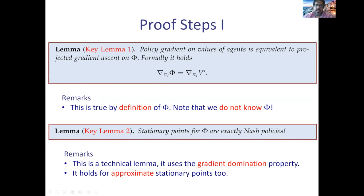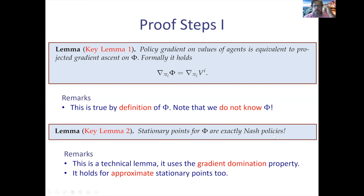The second key lemma: the stationary points of φ — points where the gradient of φ is zero, with respect to KKT conditions accounting for the simplex constraints — are exactly the Nash policies. So if you want to get a Nash policy, you don't have to find the global maximizer of φ. It suffices to get a stationary point of φ — and this holds approximately: an ε-stationary point gives an ε-Nash policy.